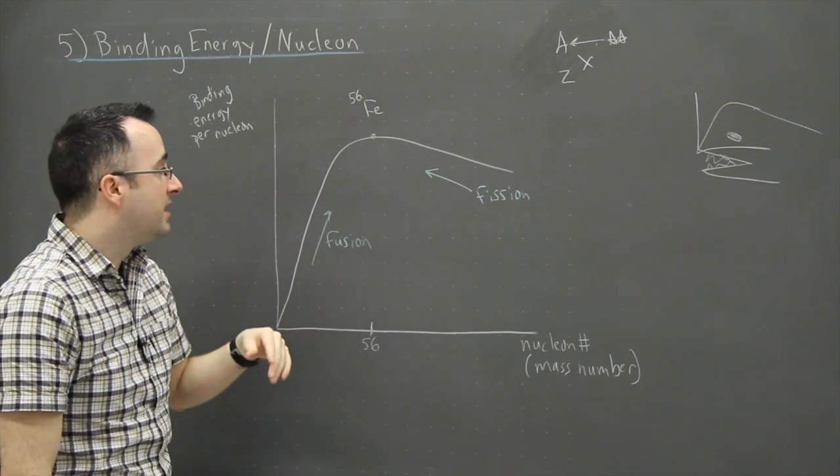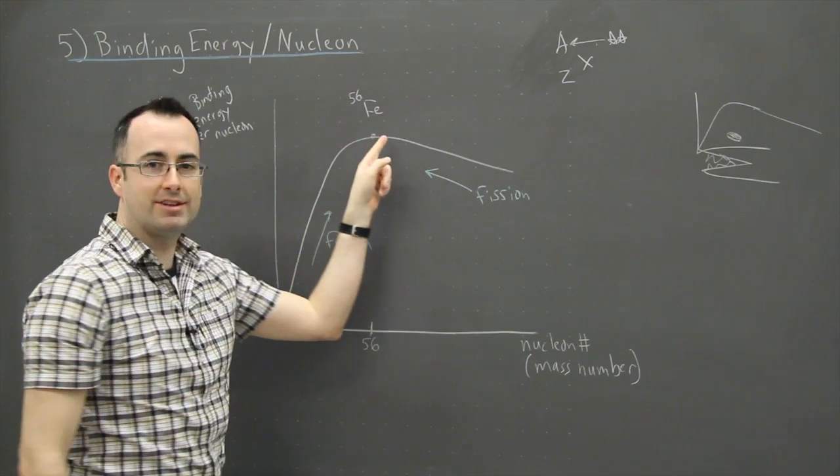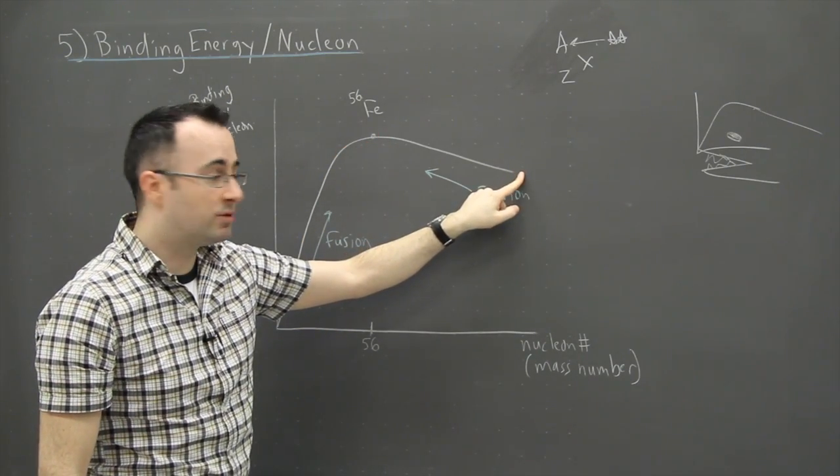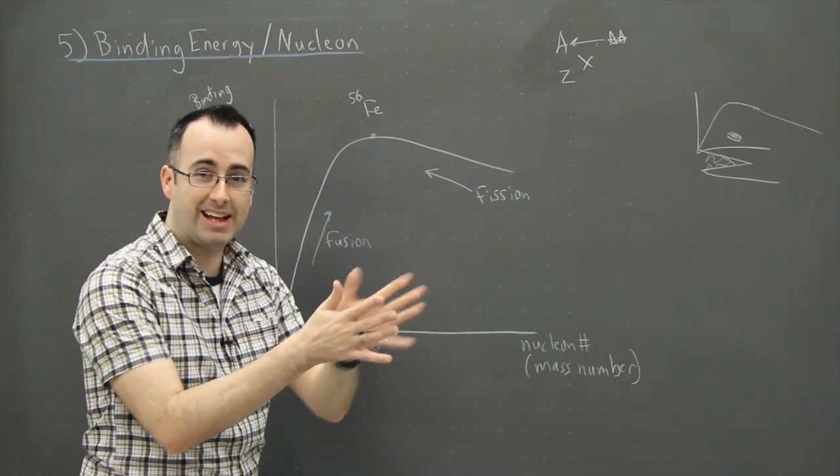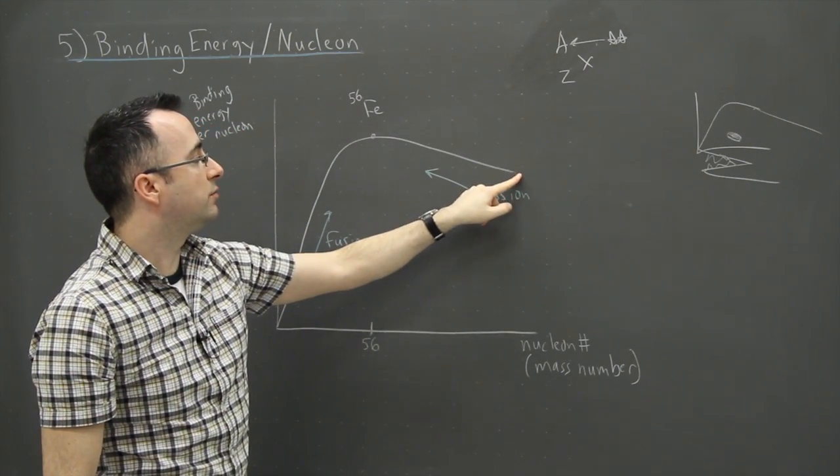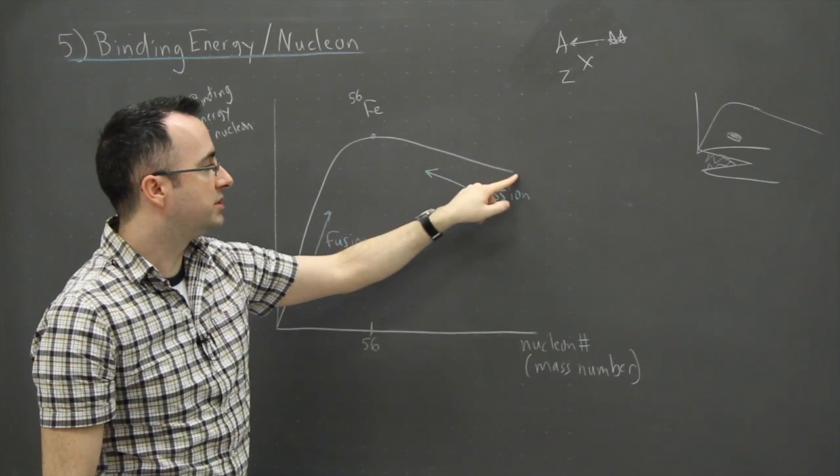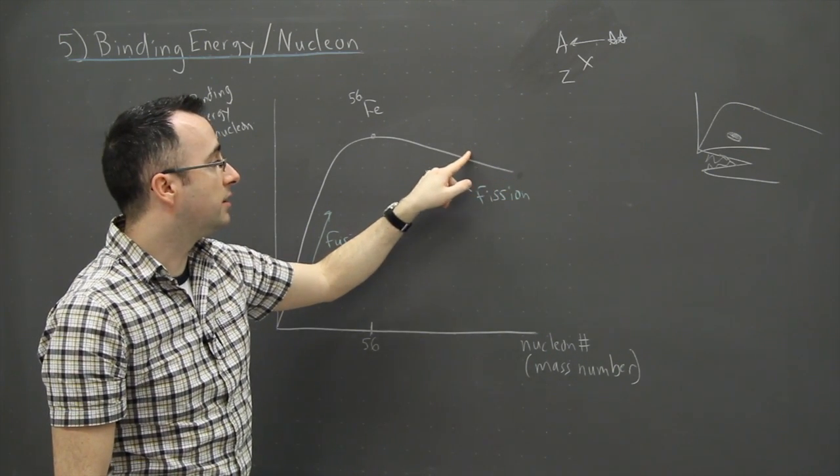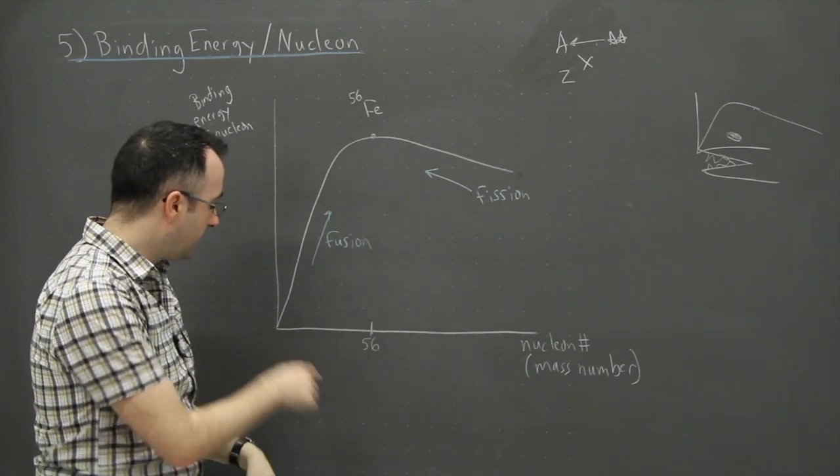So the way I remember this is that it's like things always want to aspire to the top here. So if you start off with like uranium 238, it's only going to have fission. It's only going to make lighter things if the reactants, which is the uranium here, have a lower binding energy than the products, which is whatever you end up making.